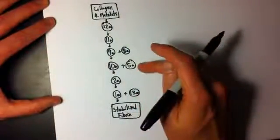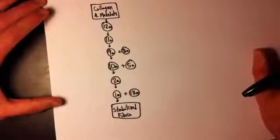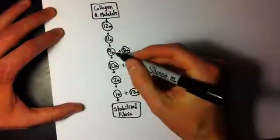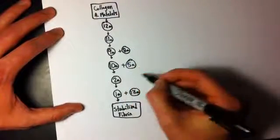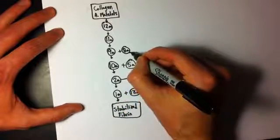So 8A, 5A, and 13A, in order to be activated, they actually all require the help of thrombin, which is 2A. So I'm just going to draw these arrows to indicate that 2A is helping form all of these.